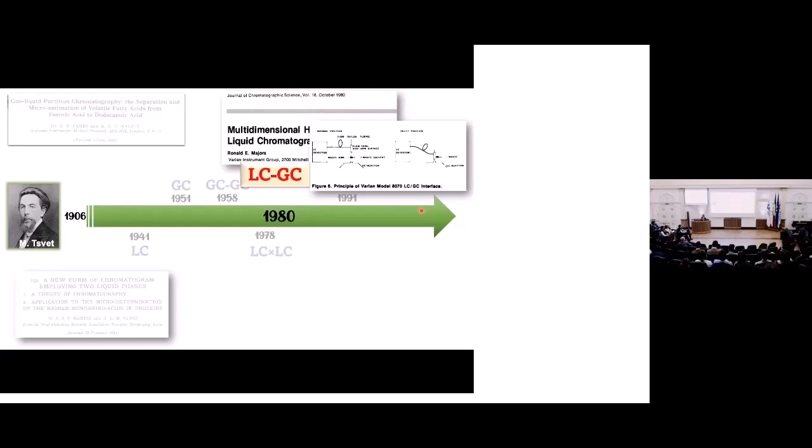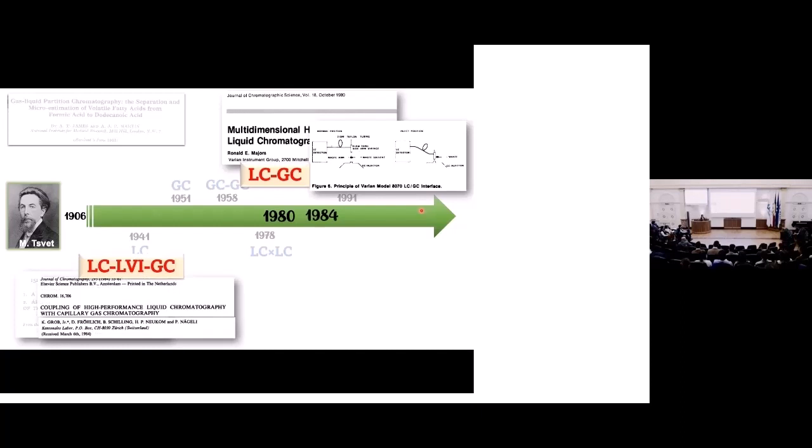The first coupling of LC with GC was published in 1980 by Majors. In that publication, he used a modified syringe to transfer the eluent from the LC into a split injector in the GC. Shortly after, we had the first large volume introduction of the LC eluent into the GC, published by the group of Groch. The development of this technique is really tightly connected with the cumbersome issue of mineral oil contamination in food.